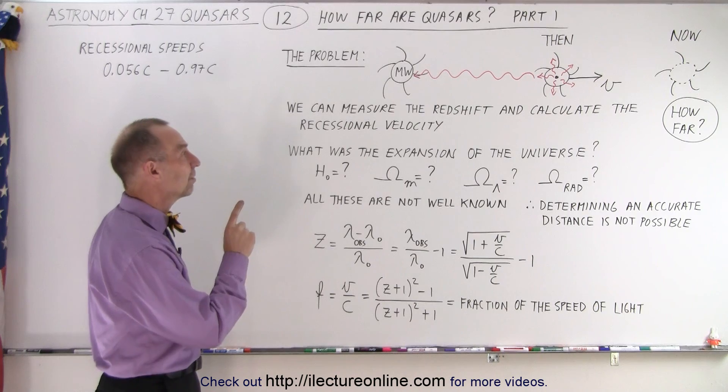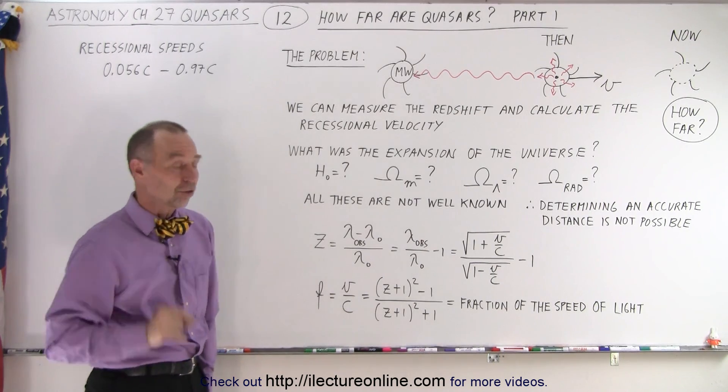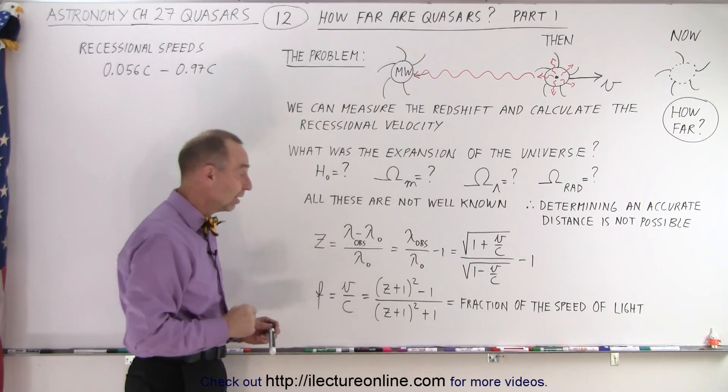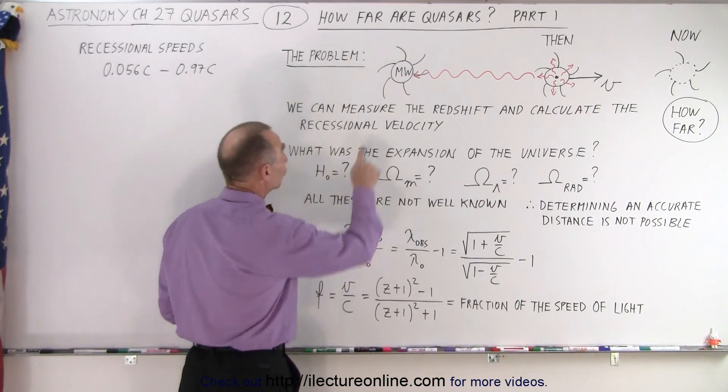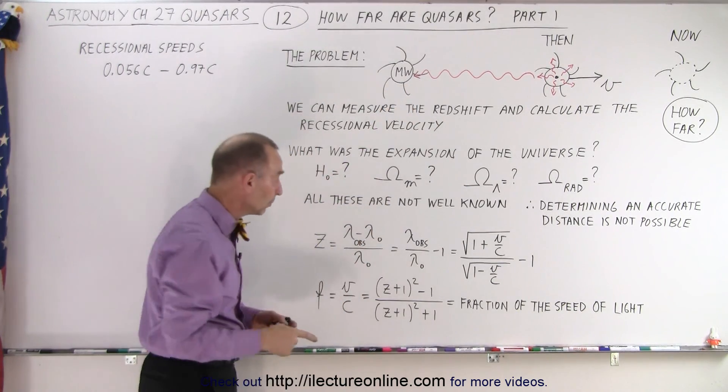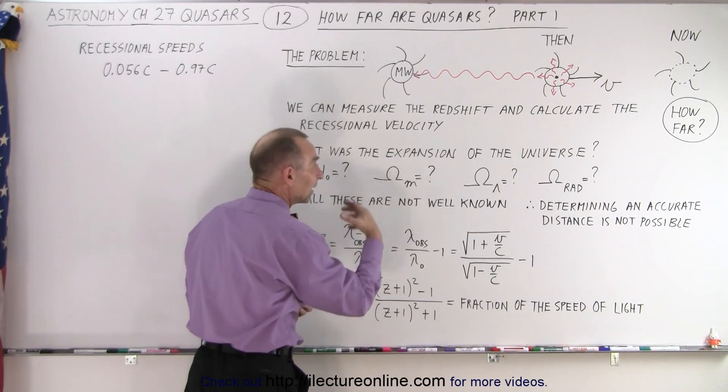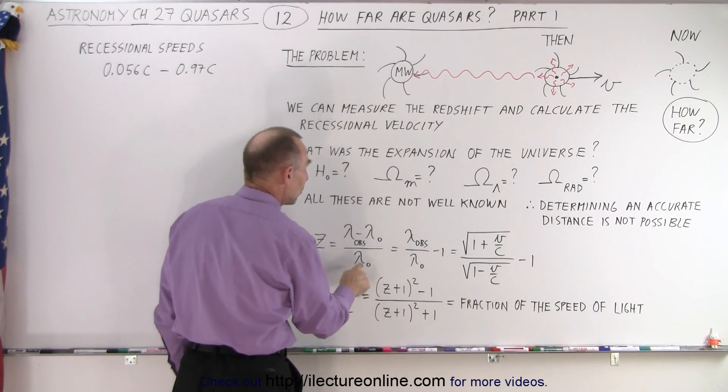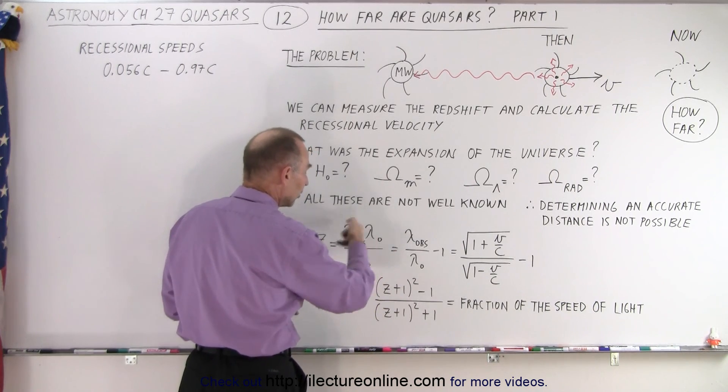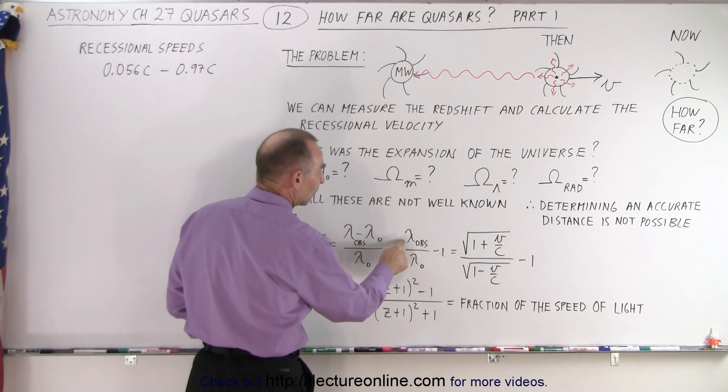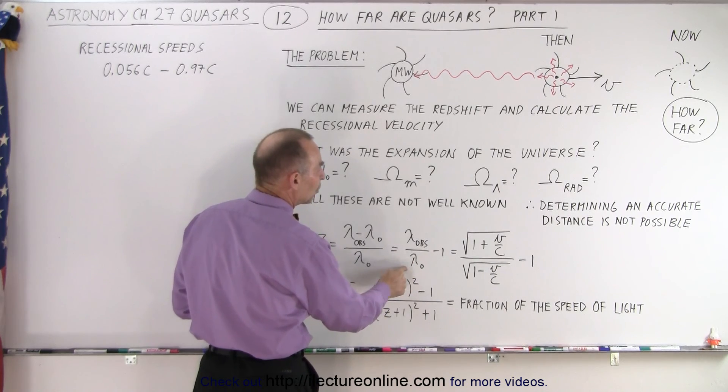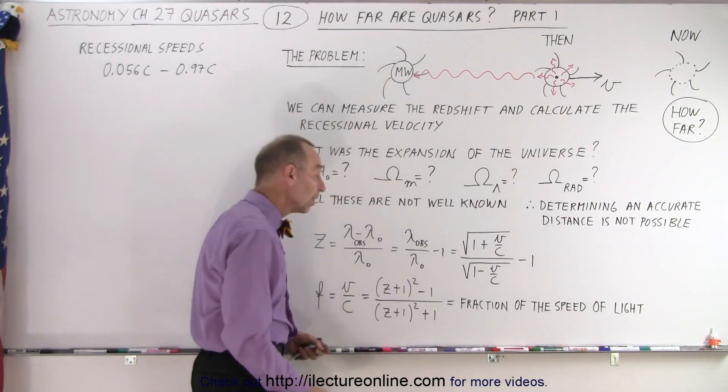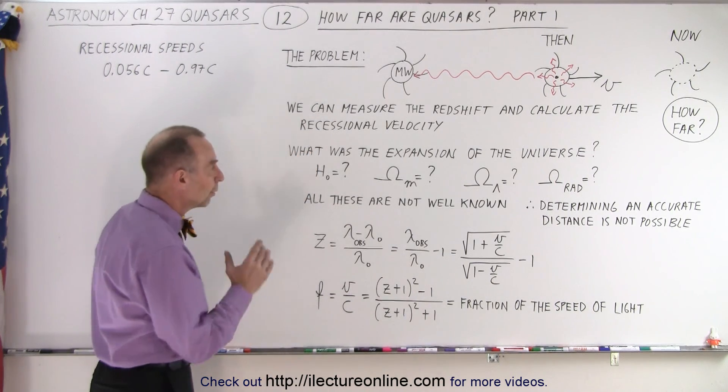So instead of doing that, we can calculate the redshift and we can calculate the recessional velocity. How do we calculate the redshift? Well, we call it the z-factor. The z redshift is calculated by taking the observed wavelength of a particular gas like hydrogen, subtract from that the wavelength that the light would be if the object wasn't moving at all, which is easy to establish in the laboratory, and we divide that by the wavelength if it wasn't moving at all. So this particular fraction, which can be written like this, the wavelength observed divided by the wavelength if it was not moving, minus one, and that can also be calculated in terms of the velocity relative to the speed of light. So it is relatively easy to calculate the redshift.